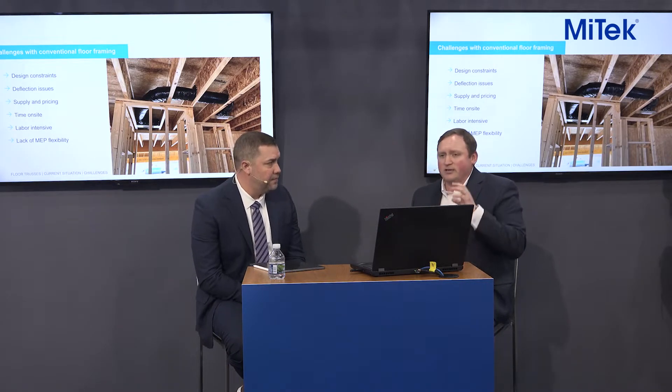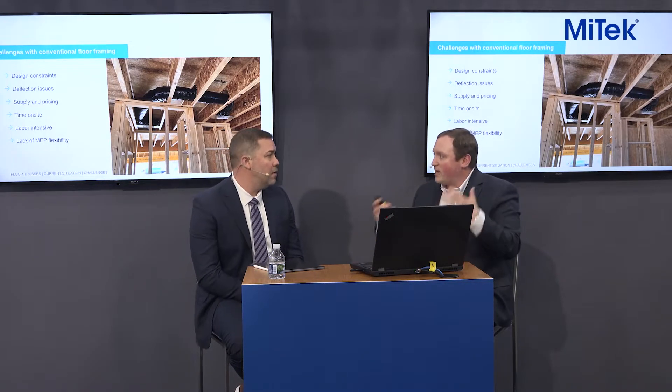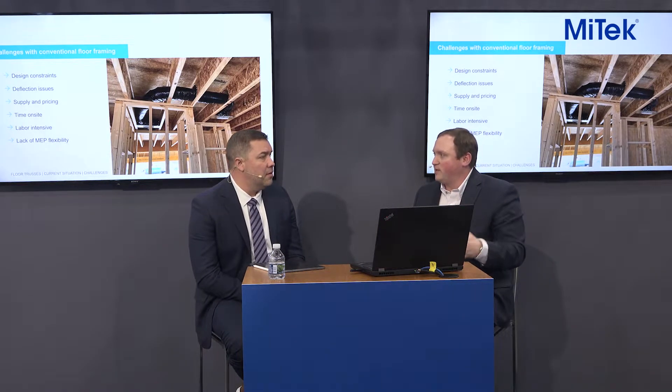Looking at the lack of MEP flexibility, time on site is a big one. Dimensional lumber always has to be spaced at 12 inches on center, EWP at either 16 or 19.2 on center, while floor trusses are spaced at 24 inches on center. You just have a lot more time to spend on other framing material and less time specifying the floor product.